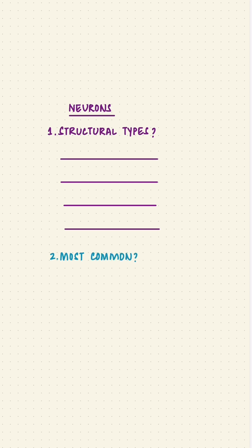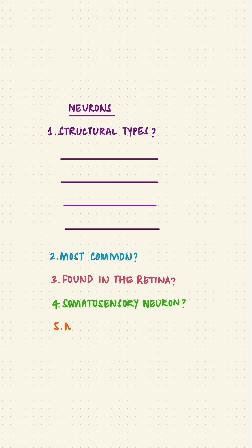Which is specially found in the retina of the eye? Which of these are sensory neurons? And which is usually not found in adult humans? You can pause the video here and take as much time as you need.